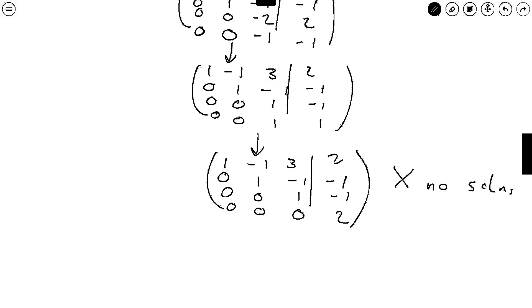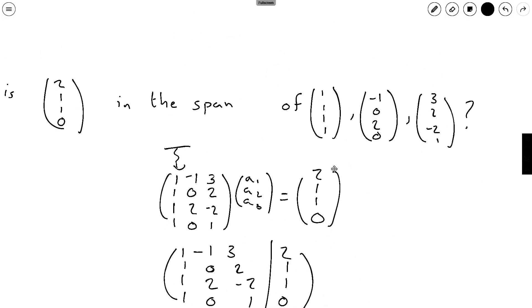Which the conclusion to this would therefore be if we go back to our original question this vector (2,1,1,0) is not in the span of these three vectors. Okay so I hope that made sense to everyone. I'll see you guys next time.